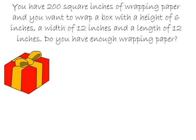Next example: you have 200 square inches of wrapping paper and you want to wrap a box with a height of six inches. It might be helpful to label these. Height is 6 inches, width is 12 inches, and length is 12 inches. The base is a perfect square. We're going to calculate the surface area and then determine whether we have enough wrapping paper.